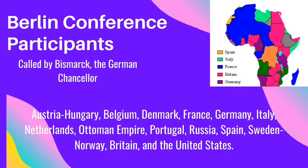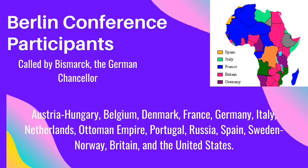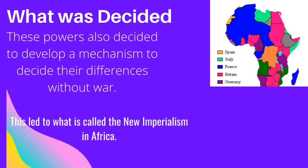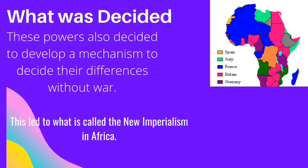Africa was divided into 50 colonies, each power claiming its own territory. What was also decided was to eliminate the slave trade. Congo, shown in yellow, was given as exclusive territory to Leopold II of Belgium. They also decided to develop a mechanism for conflict resolution, and this is what led to what is called neo-imperialism in Africa.